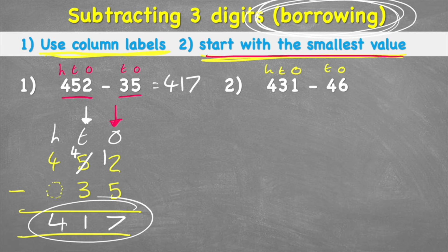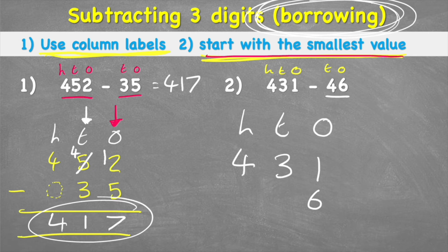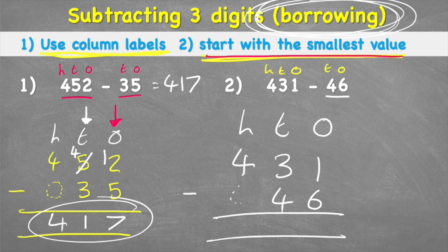For the next example, I put my column labels — ones, tens, hundreds — and arrange the numbers: 431 has one in the ones, three in the tens, four in the hundreds; 46 has six ones and four tens. I put my equals sign, subtraction sign, and include the placeholder zero under the hundreds.